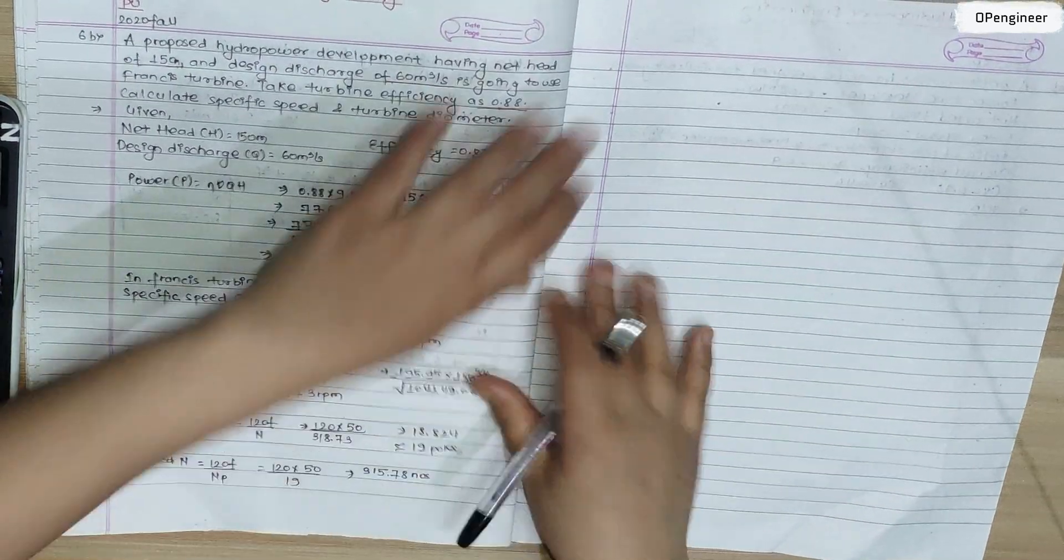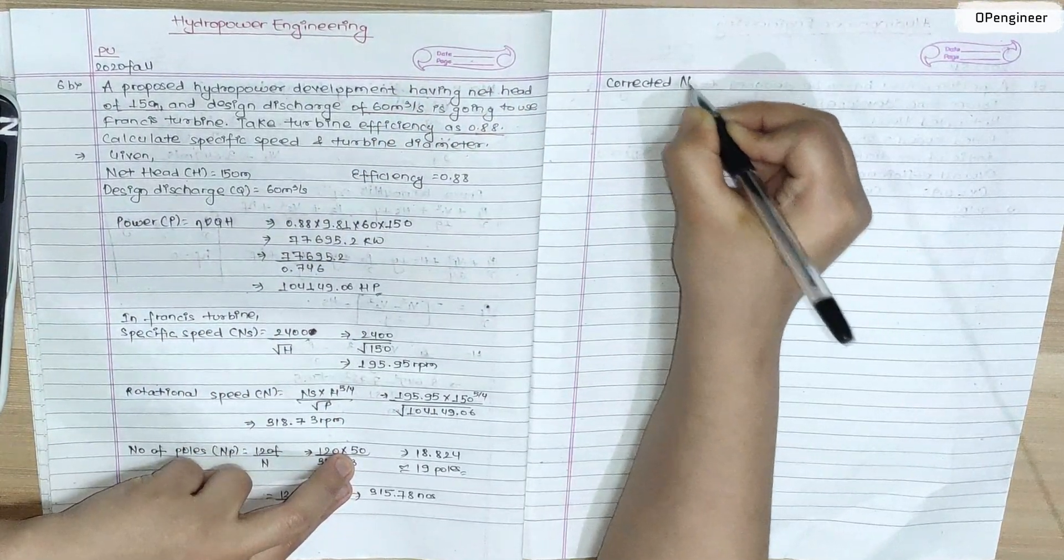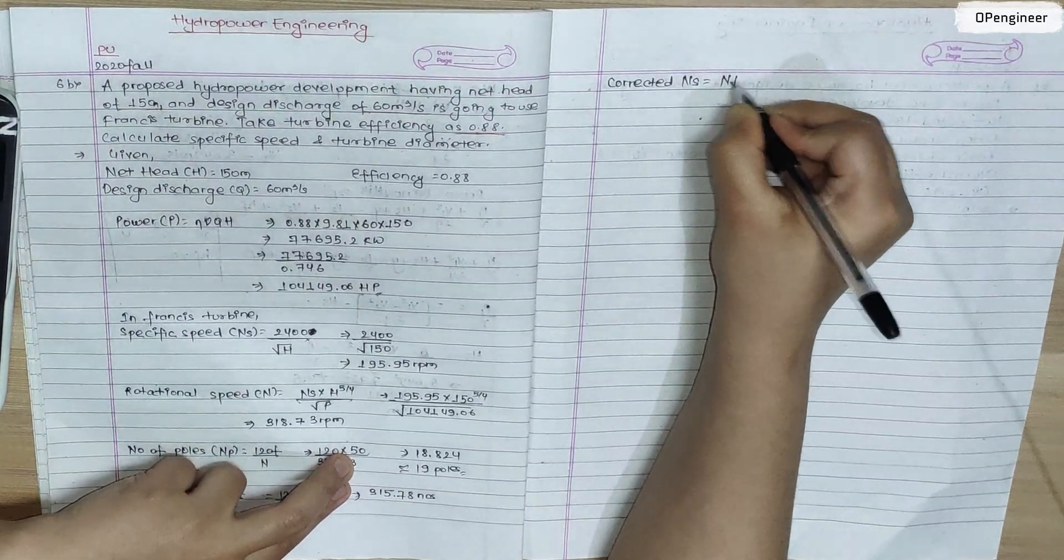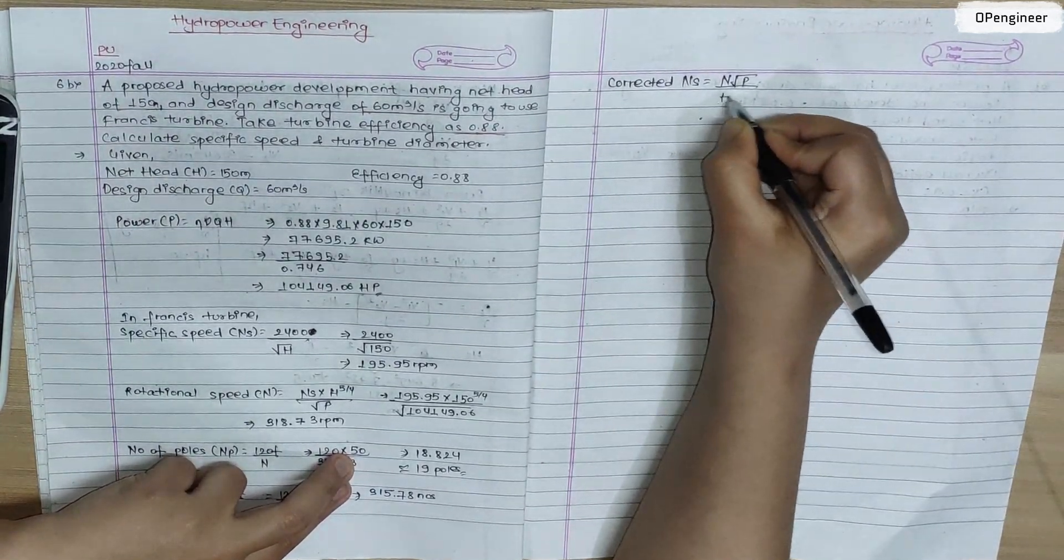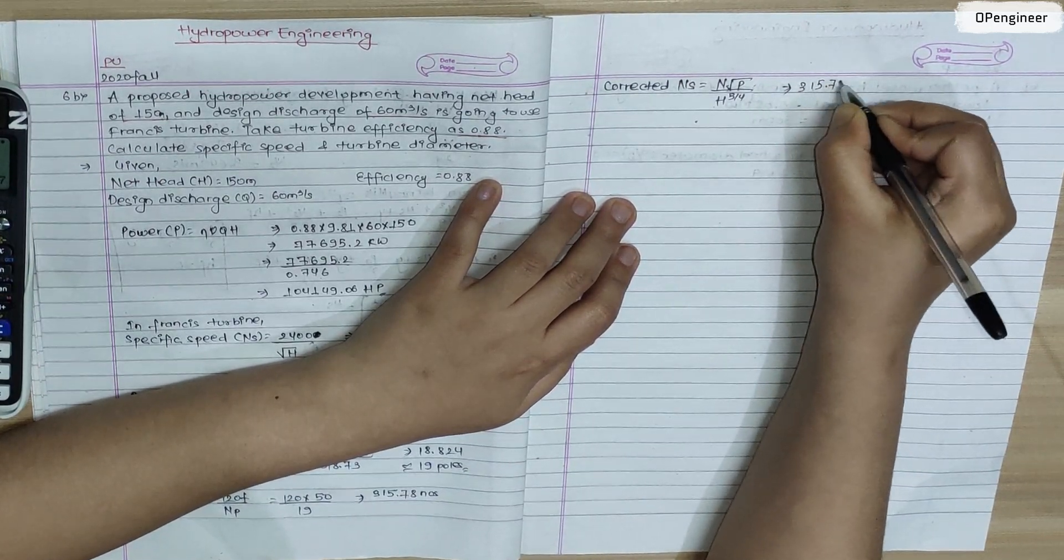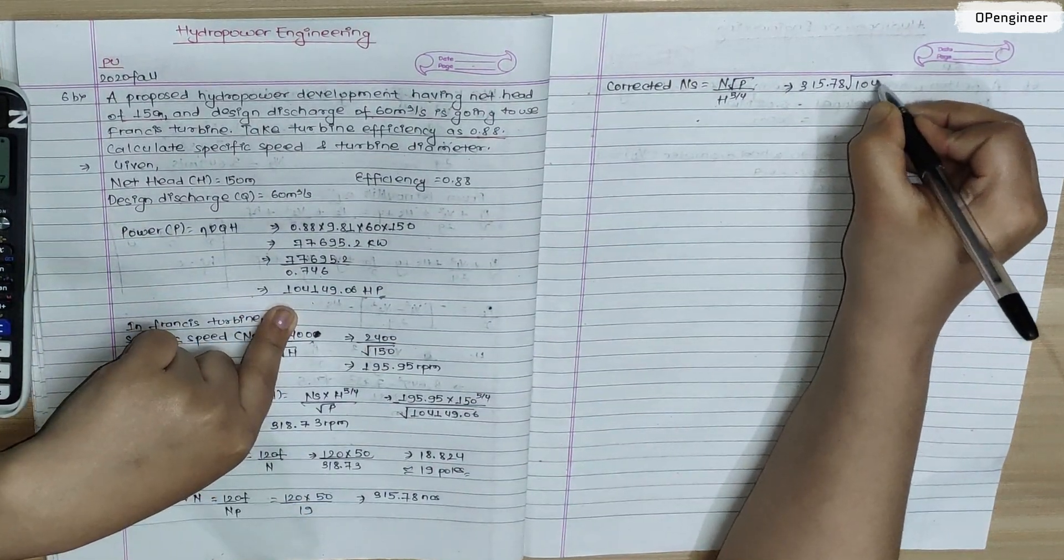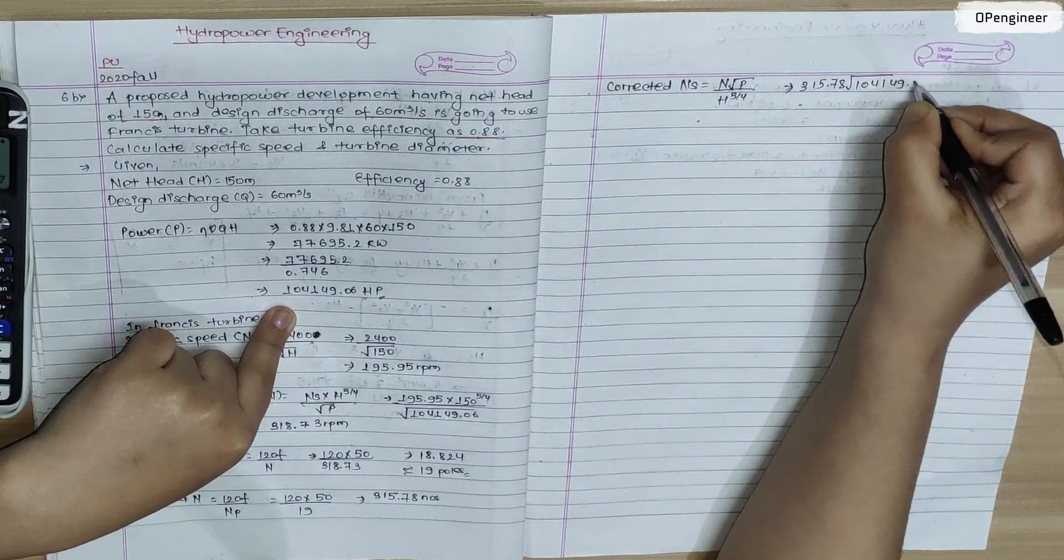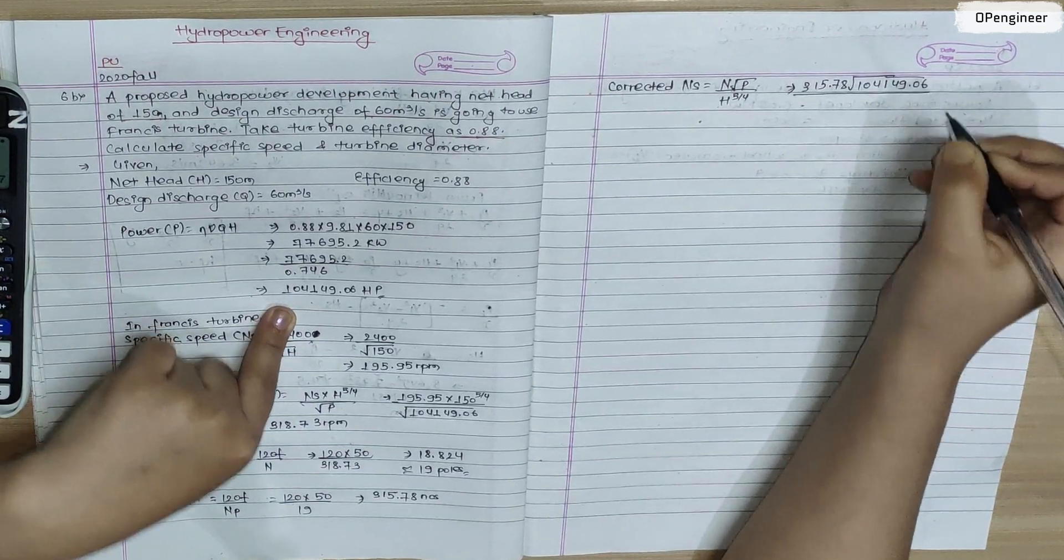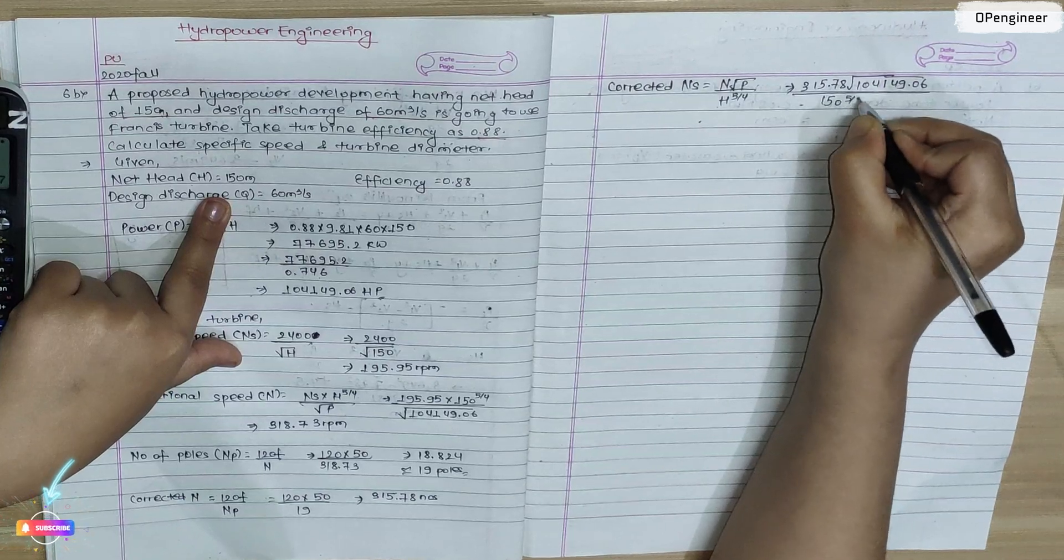Now we calculate corrected specific speed. The formula is N root P over H to the power 5 by 4. So 315.78 root over P power 104,149.06 by 150 to the power 5 by 4.